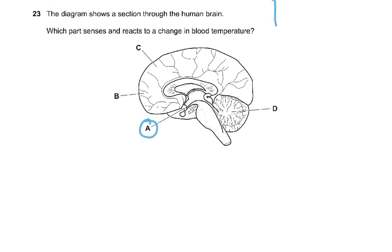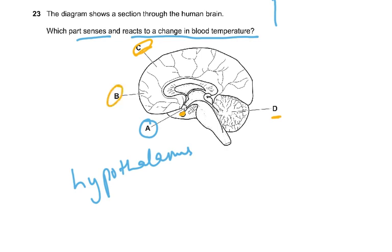Question 23, the diagram shows a section through the human brain. Which part senses and reacts to changes in blood temperature? That was the hypothalamus, the area just above the pituitary gland. This is the pituitary gland and just above it is that. D was the cerebellum which controls posture, coordination and balance. C is the cerebrum which controls memory, intelligence, reasoning and acquired skills. B and C were both the cerebral hemispheres. D was the cerebellum.